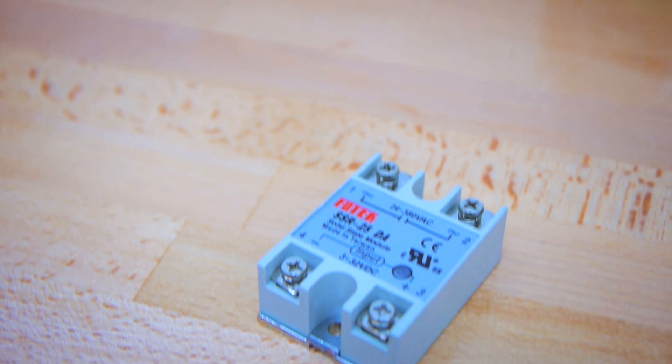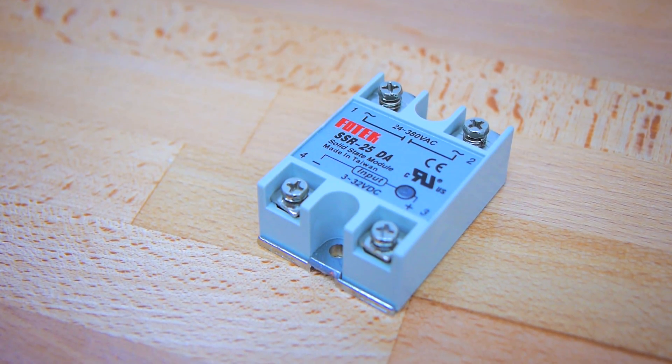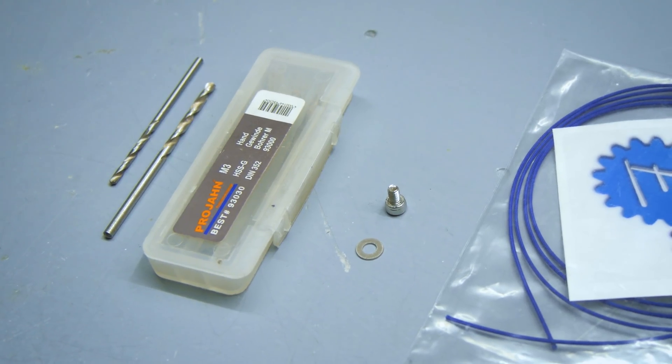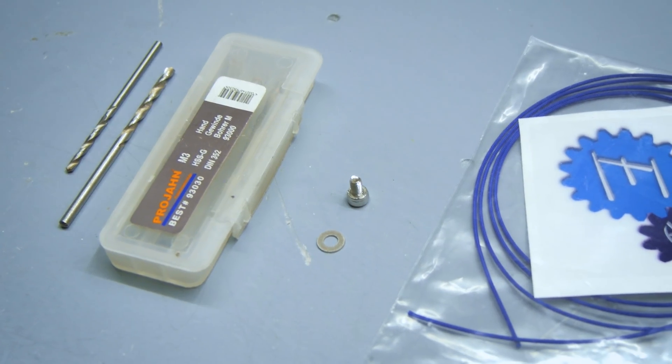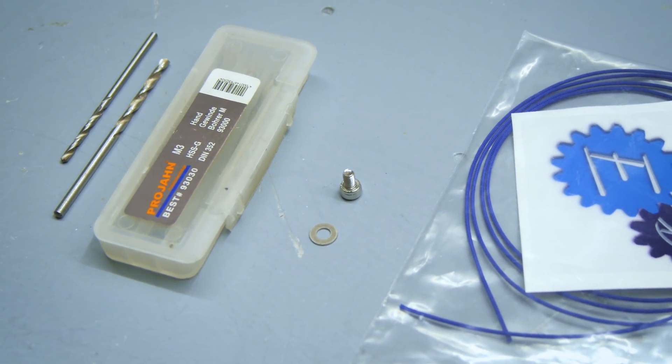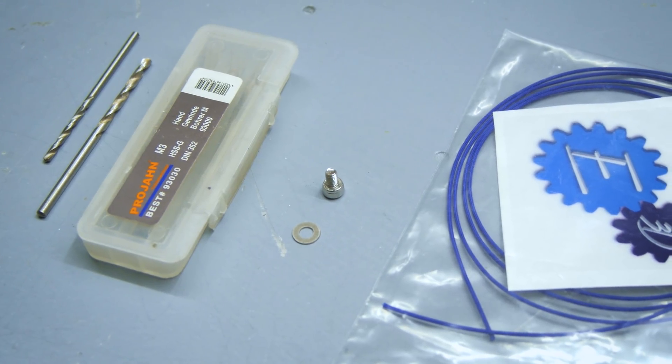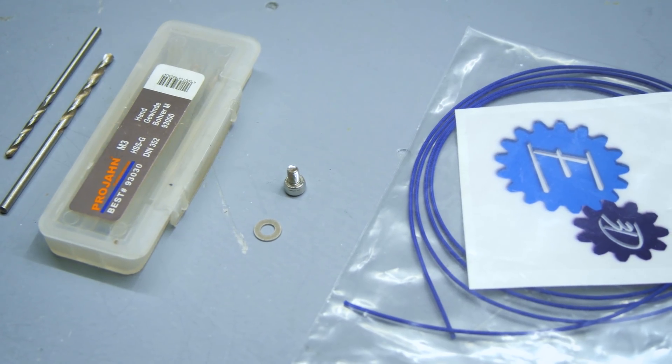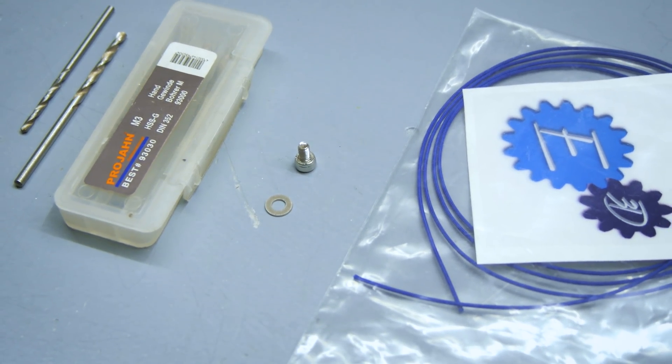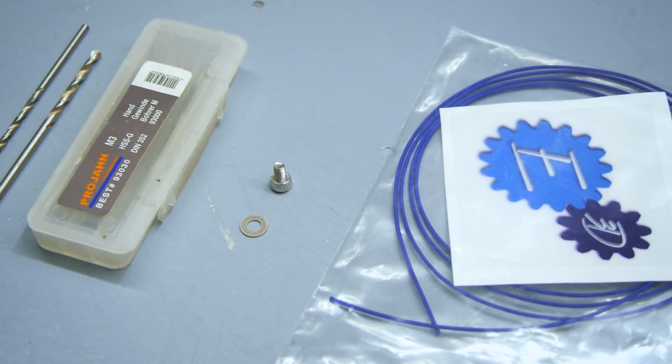At that wattage, I'd usually recommend using an SSR, but I know my printer can handle it. For this process, you'll need a 1.5 or 2mm as well as a 2.5mm drill bit, an M3 tapping set, a short M3 screw with a flat or cap head, an M3 washer, as well as the thermistor, in this case the classic Semitec one, and some glass fiber sleeving from E3D.